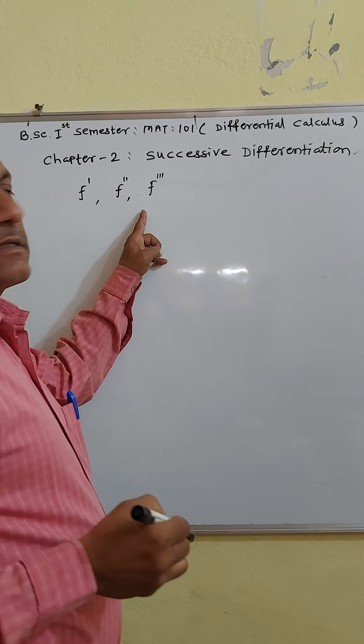Then minus 2y plus 2x means minus 2 times x plus tan x plus 2x, which gives 2 tan x minus 2x minus 2 tan x plus 2x, and all terms cancel to give 0. Therefore the left-hand side equals 0, proving the differential equation. Thank you.